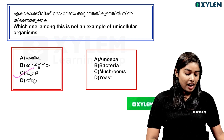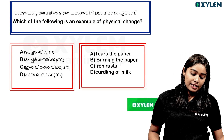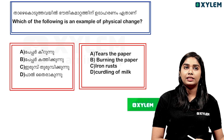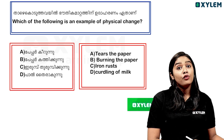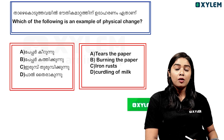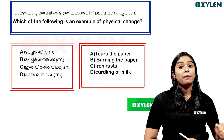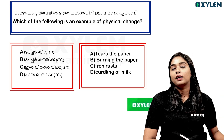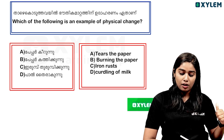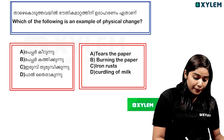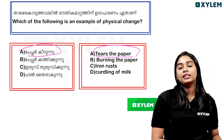Which of the following is an example of a physical change? The burning of paper, iron rust, and curdling of milk are all chemical property changes. However, tearing the paper is a physical change — when you tear paper, there is no chemical property change. That is the answer.